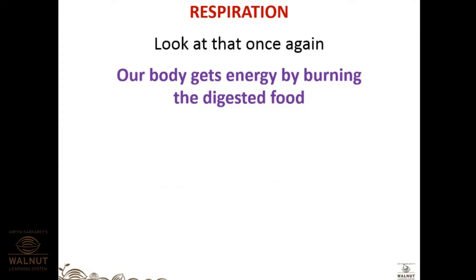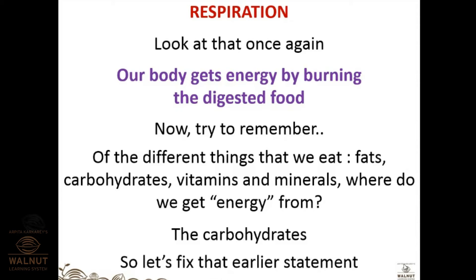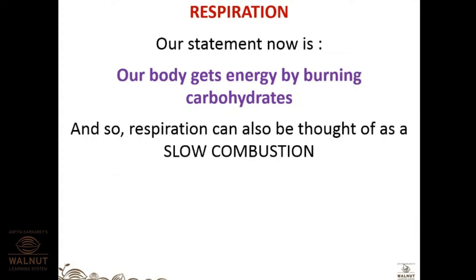Our body gets energy by burning digested food. Out of all nutrients — fats, carbohydrates, vitamins, and minerals — carbohydrates are the instant source of energy. Fat is stored as glycogen in adipose tissue. Vitamins and minerals are not energy-providing but are important for enzymatic activities. So our body gets energy by burning carbohydrates, and respiration can be thought of as slow combustion.